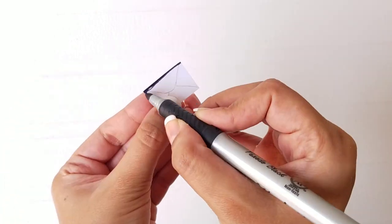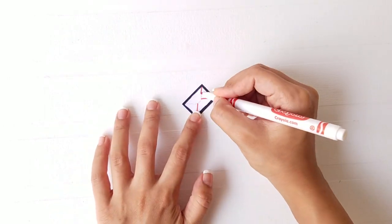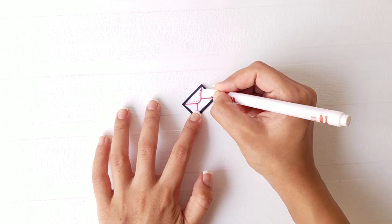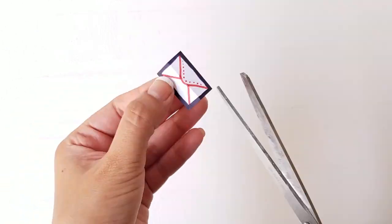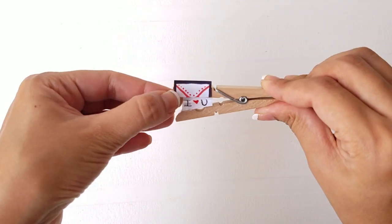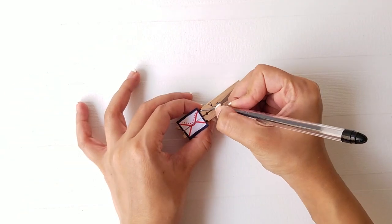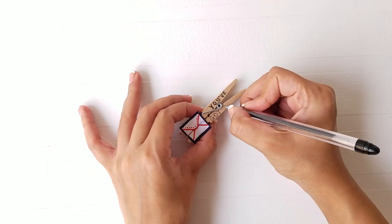Take another rectangular piece of paper and draw an envelope on it. Cut the paper in half and paste the two sides on the top and bottom end of the clip. Finally, write a message on the stem of the clip and you're done!